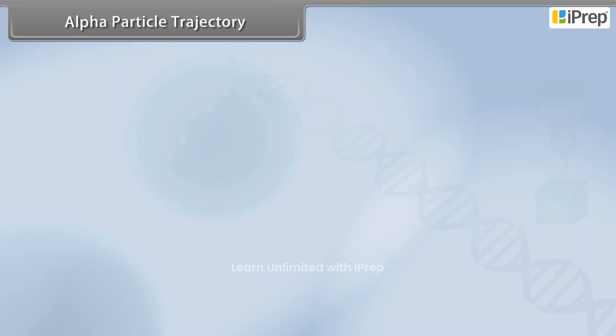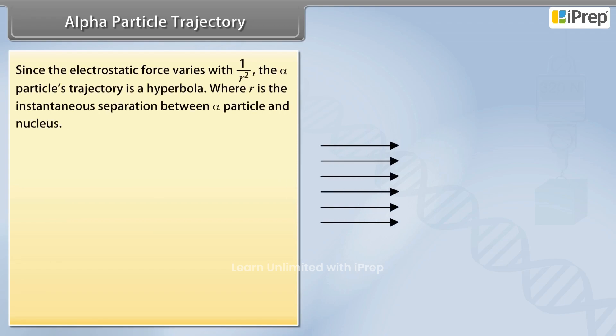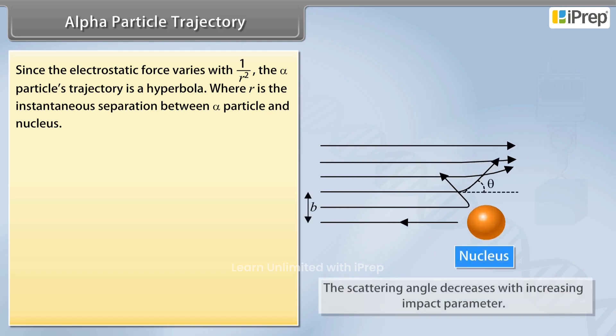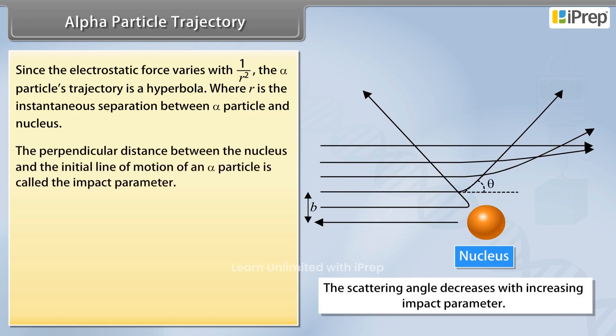Alpha particle trajectory: Since the electrostatic force varies with 1/r², the alpha particle's trajectory is a hyperbola, where r is the instantaneous separation between the alpha particle and nucleus. The perpendicular distance between the nucleus and the initial line of motion of an alpha particle is called the impact parameter.